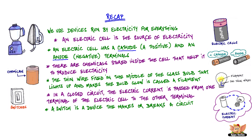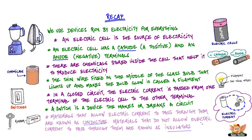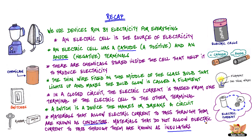A switch is a device that makes or breaks a circuit. Materials that allow electric current to pass through them are known as conductors. Materials that do not allow electric current to pass through them are known as insulators.